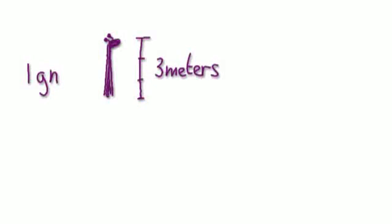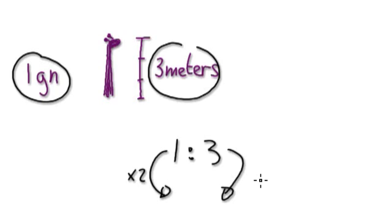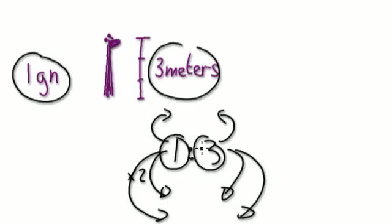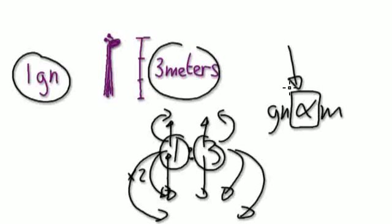In some of the early videos, I gave you a silly example where I said one giraffe neck equals three meters. So you could write it like this. When you double the amount of giraffe necks, you also double the amount of meters. When you triple the amount of giraffe necks, you also triple this amount. When you half this, you also half this. Whenever you have this kind of relationship where you increase one, the other also increases, you can say that giraffe neck is proportional to meters.